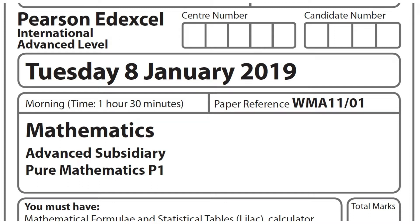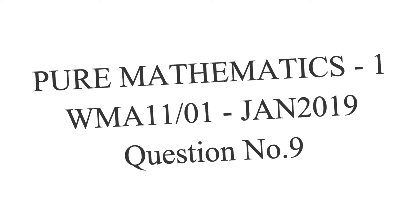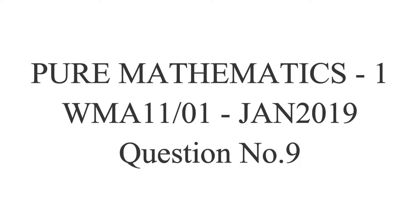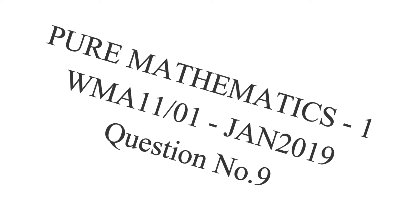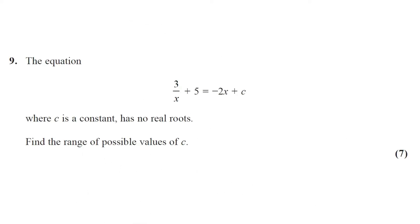Hi, welcome back to my channel. By me Mads. This is Bhaiju Vasudevan. Question number 9. The equation 3/x + 5 = -2x + c, where c is a constant, has no real roots. Find the range of possible values of c. This question got 7 marks.